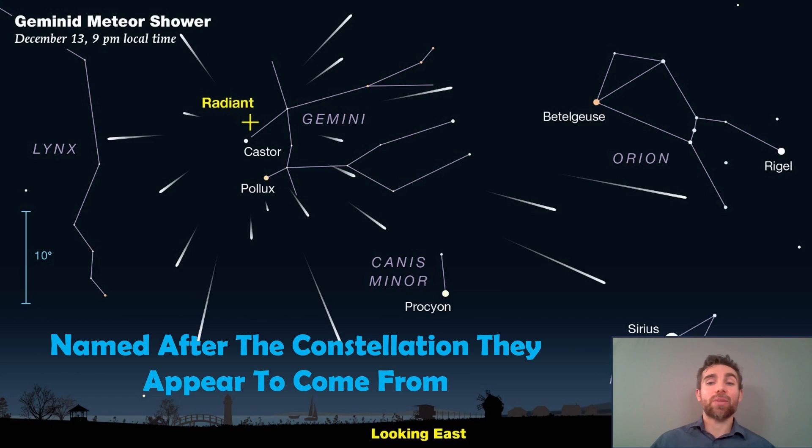Around about the time of the peak time, or it happens actually in and around that time anyway, you find the constellation of Gemini and then you just look there for however long you want to really. You'll likely see meteors radiating away from that particular point in the Gemini constellation. So they're always named after the constellation they actually apparently appear to originate from.